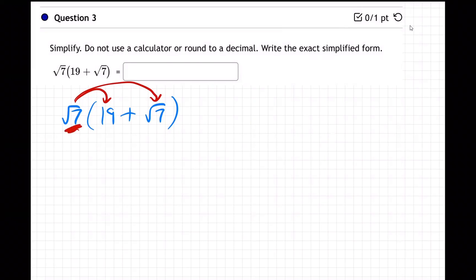So when root seven hits 19, the 19 stays on the outside and the seven stays on the inside, right? They're separate. You can't multiply 19 times seven because they're in different worlds. There's outside and inside, different worlds.